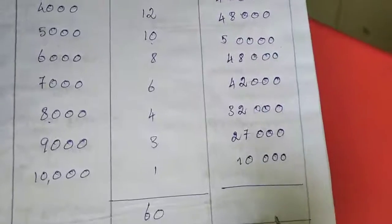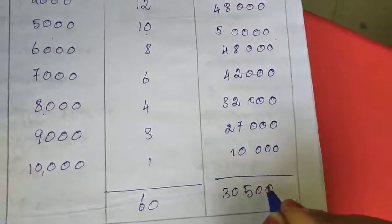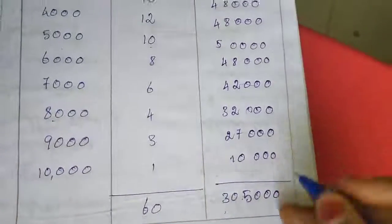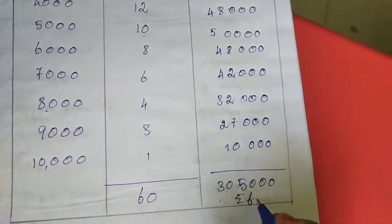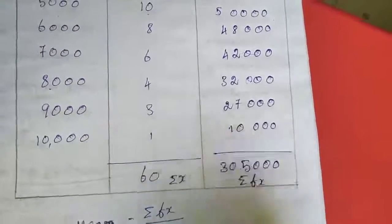If you add this one fully, you will get 385,000. This is the answer for summation f times x. If you have doubt, you have to check by addition. This is the value of summation fx.